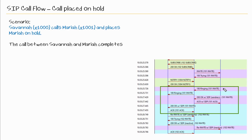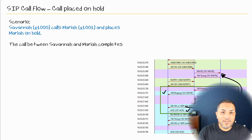We have a 180 Ringing from Mariah's phone to CUCM, then CUCM sends a 180 Ringing to Savannah's phone. Then Mariah responds to the invite sent by CUCM, and CUCM sends the ACK to that invite. A 200 OK is sent from CUCM to complete the invite that Savannah had sent earlier, then Savannah's phone sends the ACK. At this point the call is established and complete between Savannah and Mariah.